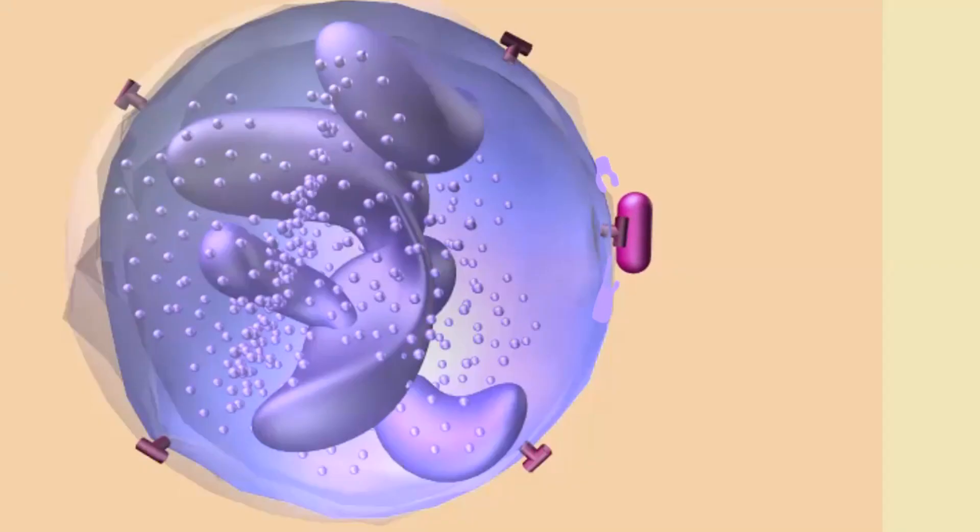Extensions of the cell membrane, known as pseudopods or false feet, begin to encircle the microbe. Once these pseudopods fuse, they will then completely contain the microbe in an internal membrane bag known as a vesicle.